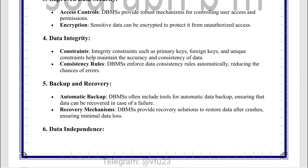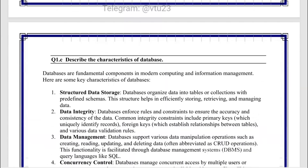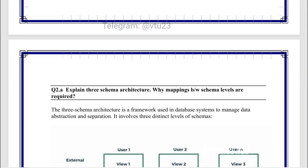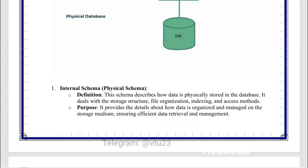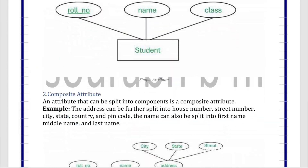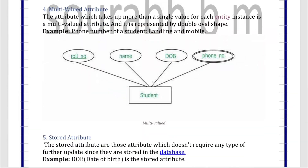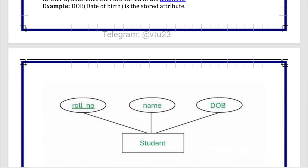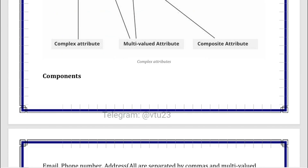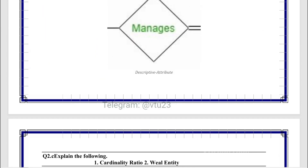That's it for today's walkthrough of DBMS model papers with smart strategies. Don't forget to check the pinned comment for PDF downloads of model 1 and 2 with solutions. Revise smart, write neat, and aim for 80+. All the best for your VTU exams — you've got this.